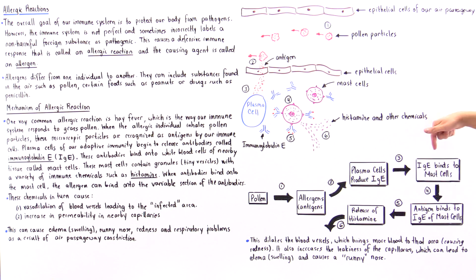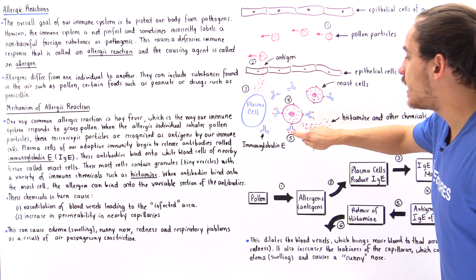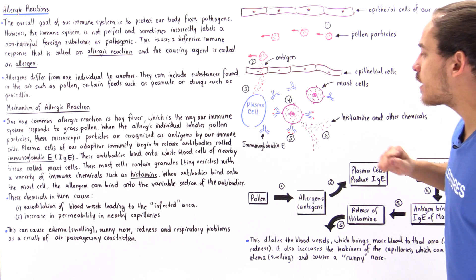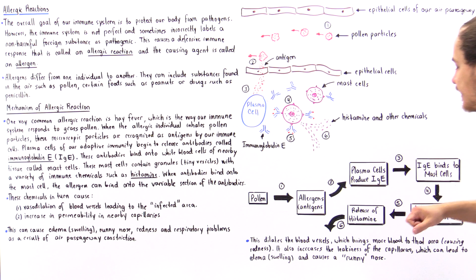These antibodies then bind onto our mast cells, onto these special receptors, and now these antigens can go on and bind onto these antibodies at the variable portion. And when the binding takes place,